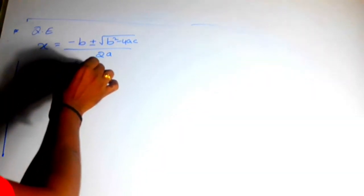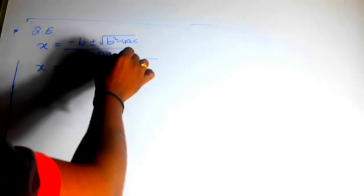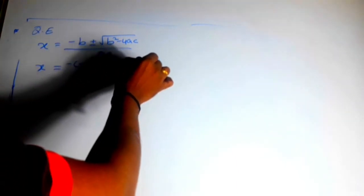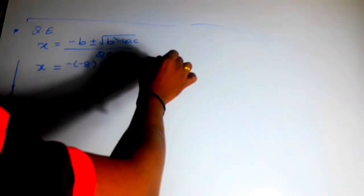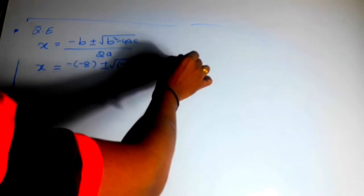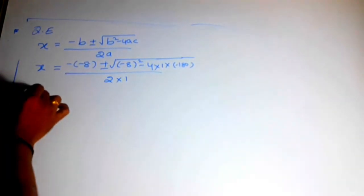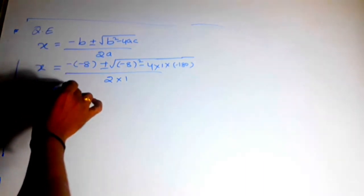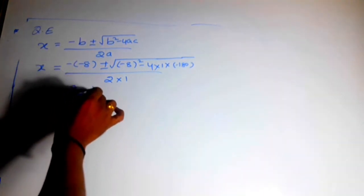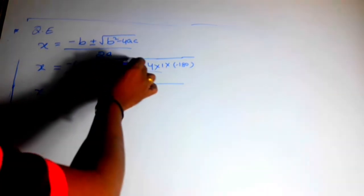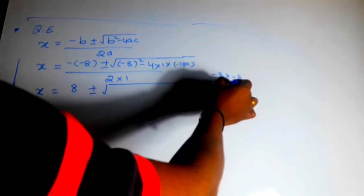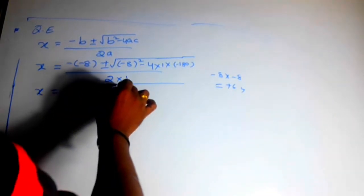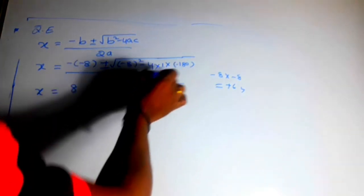Substituting: minus of minus 8 is plus 8. b squared is minus 8 squared which is 64. Then 4 into a which is 1, into c which is minus 180, gives minus 720. Minus into minus is plus, so we get 64 plus 720 under the root, divided by 2 into 1 which is 2.